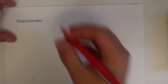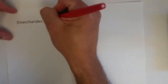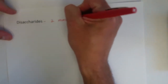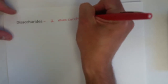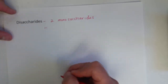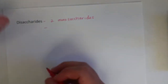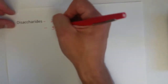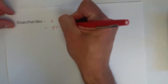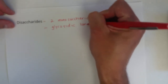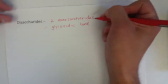Disaccharides are a carbohydrate with two monosaccharides linked together. They are formed by an ether bond between the two monosaccharides that we call a glycosidic bond.